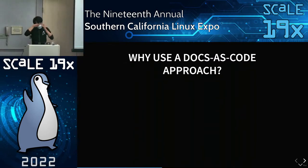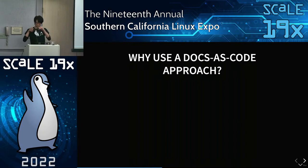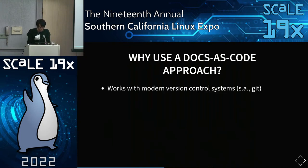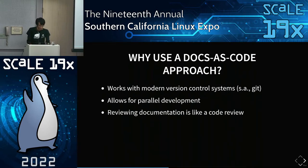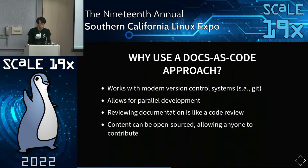I was wondering why I was having breathing problems and realized I still had my mask on. So, why use a Docs as Code approach? One is that it works with modern version control tools like Git, because documentation in plain text is compatible with those tools. By extension, using a distributed version control system also allows for parallel development. Reviewing documentation becomes like a code review — if you host your documentation on GitHub or GitLab, reviewing content is as simple as opening up a pull request.